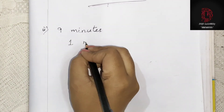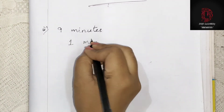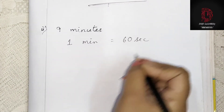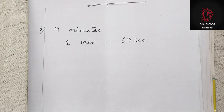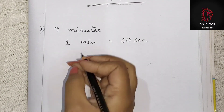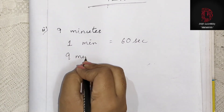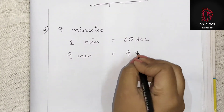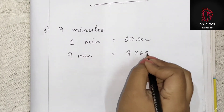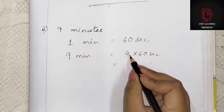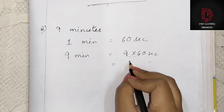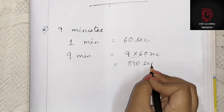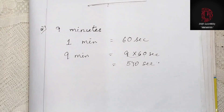Now for the same type of question: 1 minute is equal to 60 seconds. So how many seconds are in 9 minutes? We do 9 into 60, which gives us 540 seconds.